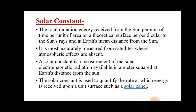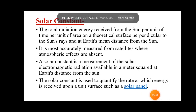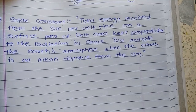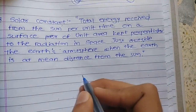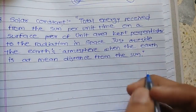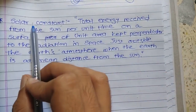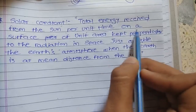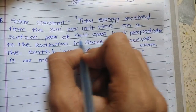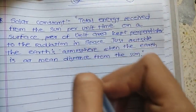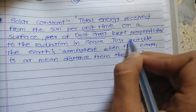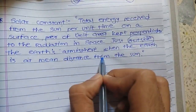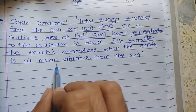Related to the solar constant, we will first understand some theoretical concepts, then move to the next point. We are going to discuss the solar constant, extraterrestrial radiation, and terrestrial radiation. By definition, the solar constant is the total energy received from the sun per unit time on a surface of unit area kept perpendicular to the radiation, in space just outside the Earth's atmosphere, when the Earth is at its mean distance from the sun.